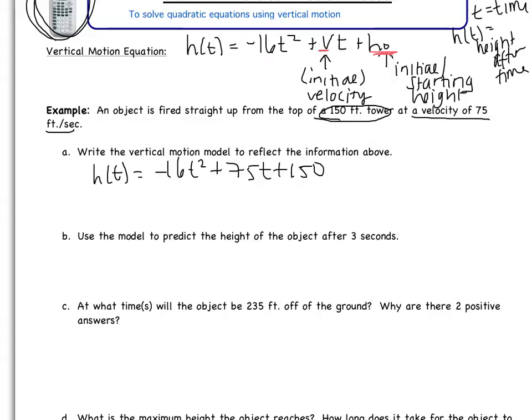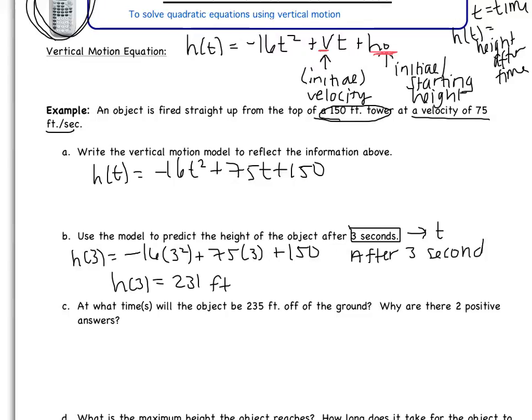Part B: Use the model to predict the height of the object after 3 seconds. Okay, 3 seconds. That's going to be a T. That's going to be a time. So now we're going to use our model. We want to find the height after 3 seconds. So we want to find H of 3. So I'm going to substitute in 3 for T. This becomes negative 16 times 3 squared, add 75 multiplied by 3, add 150. When I do this in my calculator, I get 231. And then this is going to be feet. So I'm just going to write a little sentence so that I know what this means. After 3 seconds, the object is 231 feet above the ground. Okay, which should make sense. It started at 150 feet, and then it's increasing to 231 feet.